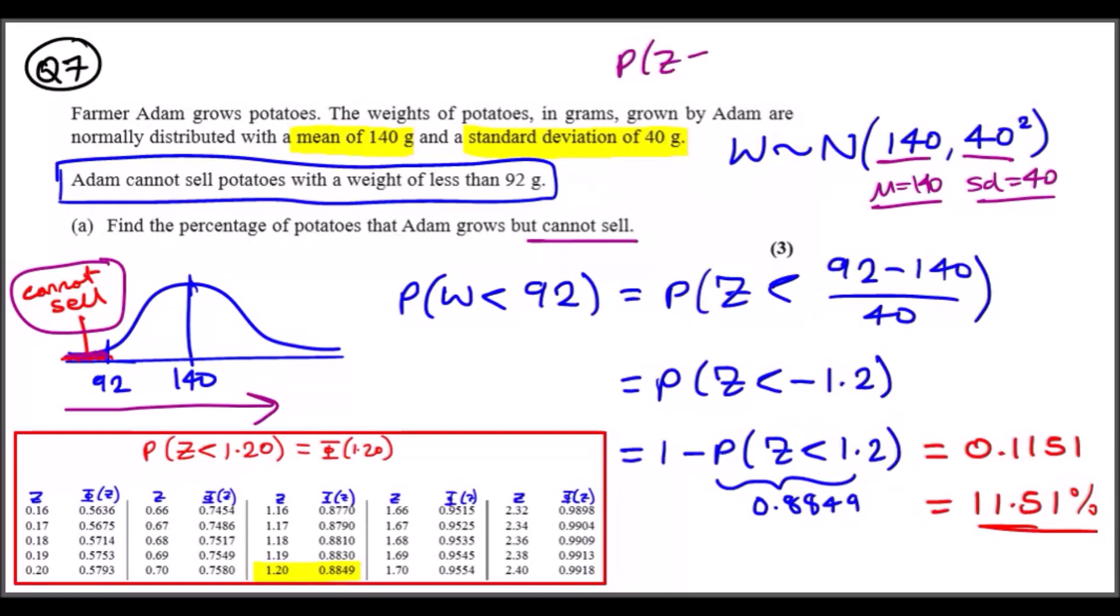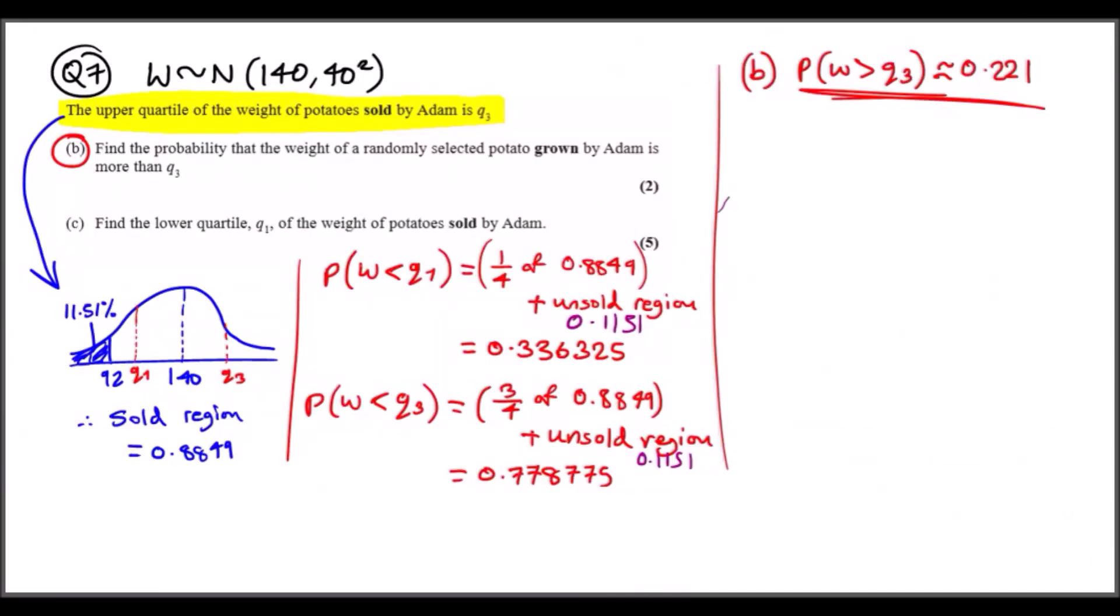You can always write probability Z is less than minus X, which is the same as one minus the same thing but of just X. This is a nice little technique. You do that, you've got 1.2, look at the normal table, 1.2 is here, and you get 0.8849. So 1 minus this value is 11.51 percent.